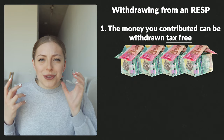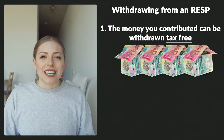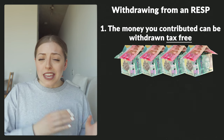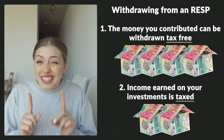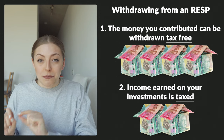When you go to take money out of the RESP for the kid's education, the money that you contributed yourself can be withdrawn completely tax-free. But the income earned on top of your investments — that money is taxed, but it's taxed at the kid's income tax bracket instead. The key thing to keep in mind is that your kid's income tax bracket is likely going to be a lot lower than yours, so they'll pay very little taxes.